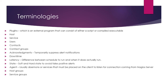Host groups are a collection of hosts — for example, a collection of Linux machines can be put into a Linux host group, and a collection of Windows machines into a Windows host group. Service groups are similar — for example, if you are monitoring some temperature sensors, you can put all those services into one group called a service group.